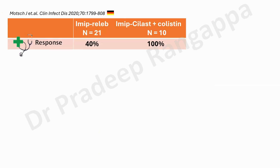The second study came in 2020 from a German group, conducted in Germany and Brazil. They compared imipenem-relebactam against imipenem-cilastatin with colistin — 21 patients in the relebactam arm and 10 in the colistin arm. When looking at CRE-KPC specifically, there was a 40% clinical response with relebactam, but the CRE subgroup had only 5 patients on imipenem-relebactam and 2 on imipenem-cilastatin. No statistical conclusion could be drawn due to the very small numbers. Based on this, imipenem-relebactam receives lower weightage than meropenem-vaborbactam and ceftazidime-avibactam.